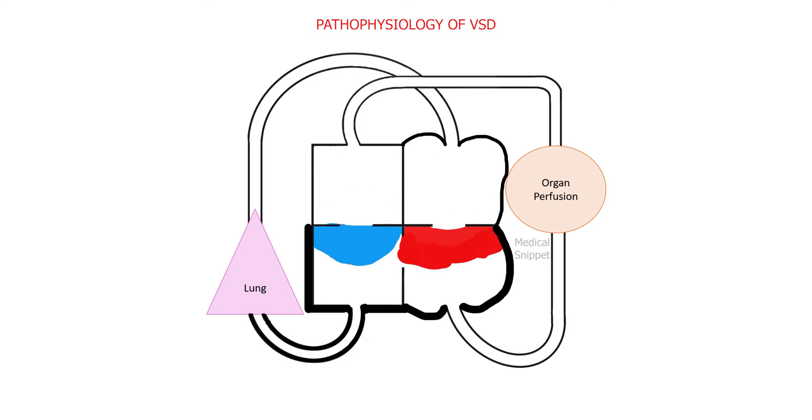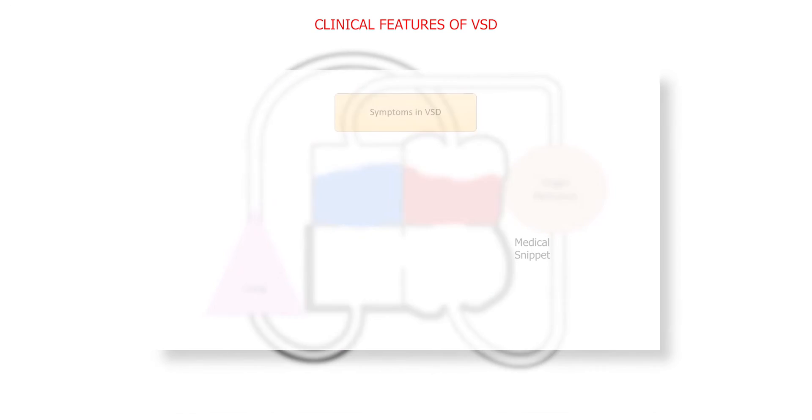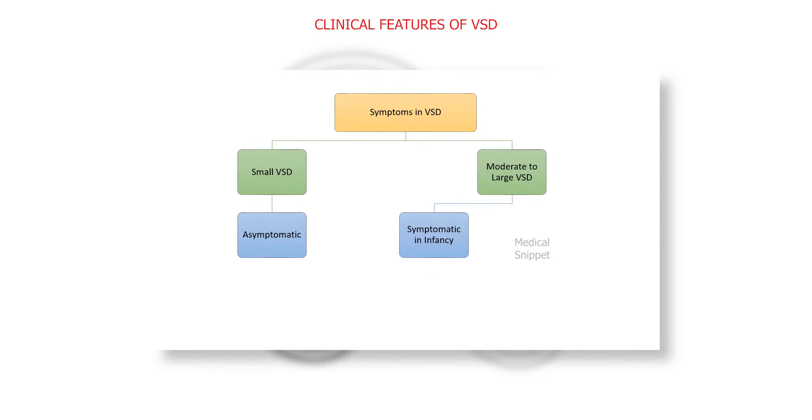Let's see the clinical features of VSD. In small VSD, the children are usually asymptomatic. In moderate to large VSD, the symptoms develop in infancy itself. Babies can develop congestive heart failure symptoms due to left ventricular volume overloaded state due to the shunt.